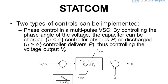STATCOM: two types of controls can be implemented. Phase control in a multi-pulse VSC — by controlling the phase angle of the voltage, the capacitor can be charged (less than: controller absorbs P) or discharged (greater than: controller delivers P), thus controlling the voltage output V.